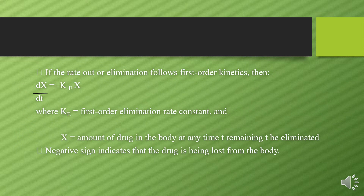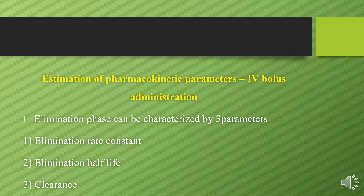Next, we express the same equation in the form of first-order kinetics: dX/dt = −Ke·X. This is the preliminary equation we write for IV bolus. When writing an equation, explain the parameters — Ke is the first-order elimination rate constant; capital X is the amount of drug in the body at any time t remaining to be eliminated. The negative sign indicates the drug is being lost from the body.